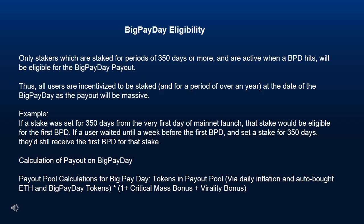Big Pay Day Eligibility. Only stakers which are staked for periods of 350 days or more, and are active when a BPD hits, will be eligible for the Big Pay Day payout. Thus all users are incentivized to be staked for a period of over a year at the date of their Big Pay Day, as the payout will be massive. For example, if a stake was set for 350 days from the very first day of mainnet launch, that stake would be eligible for the first BPD. If a user waited until a week before the first BPD and set a stake for 350 days, they'd still receive the first BPD for that stake.